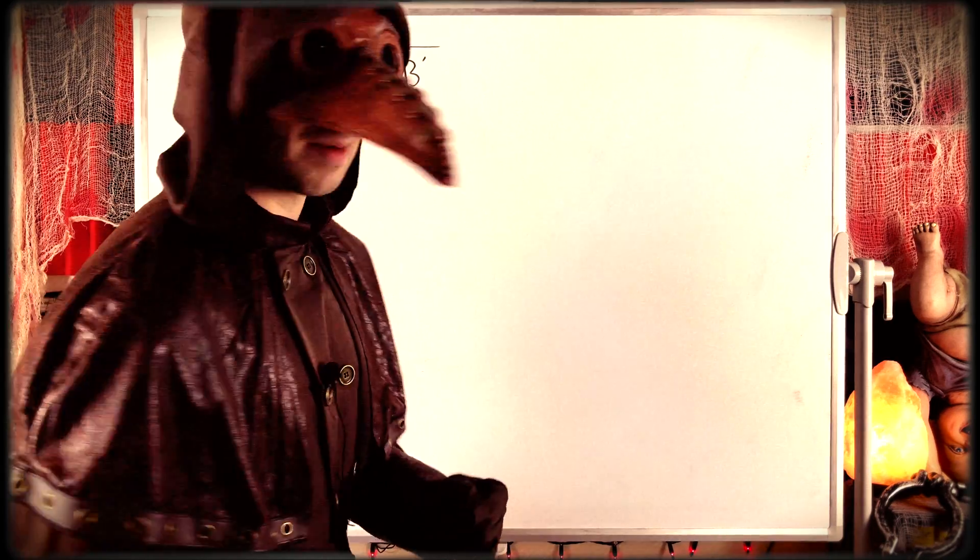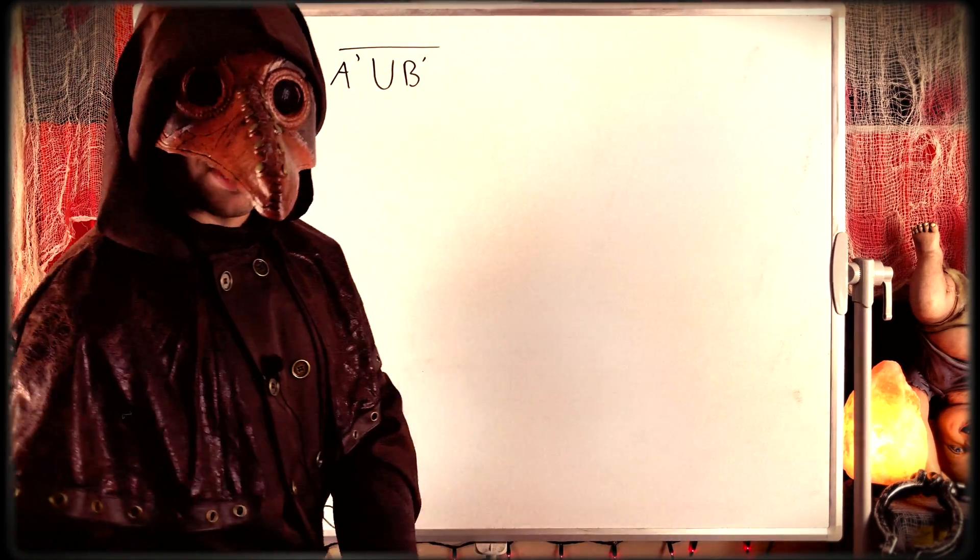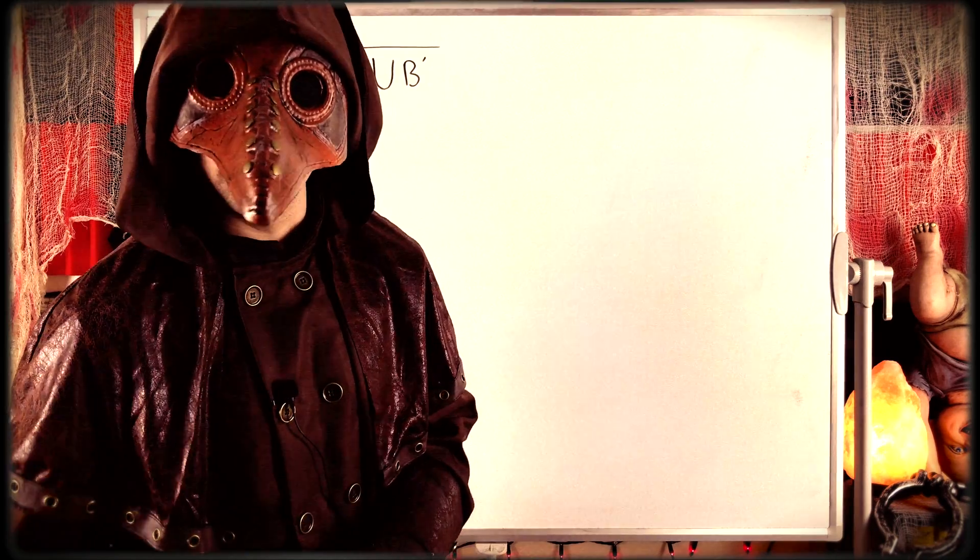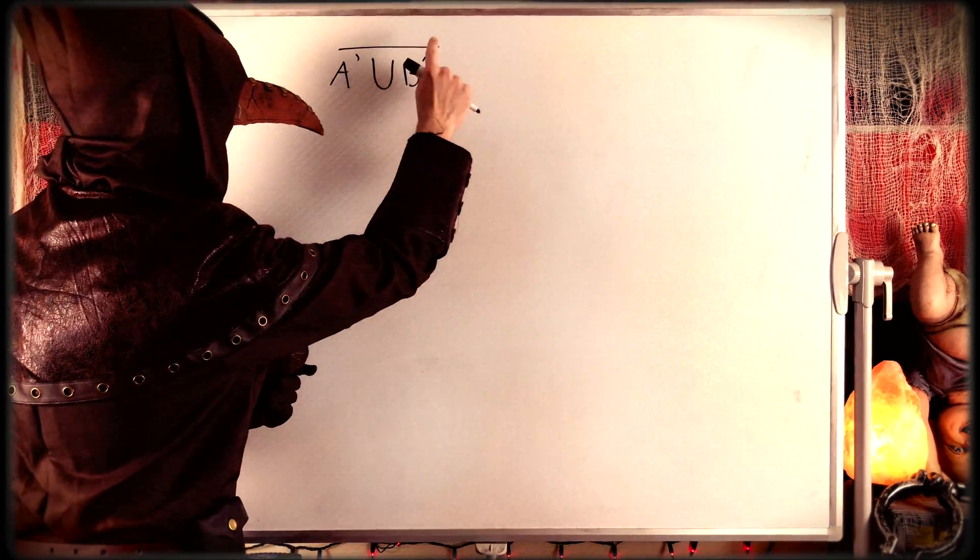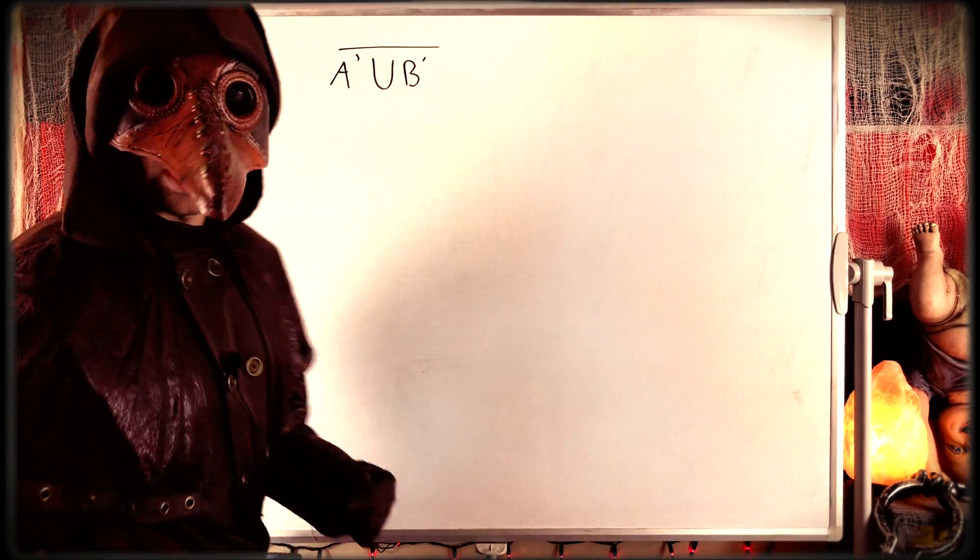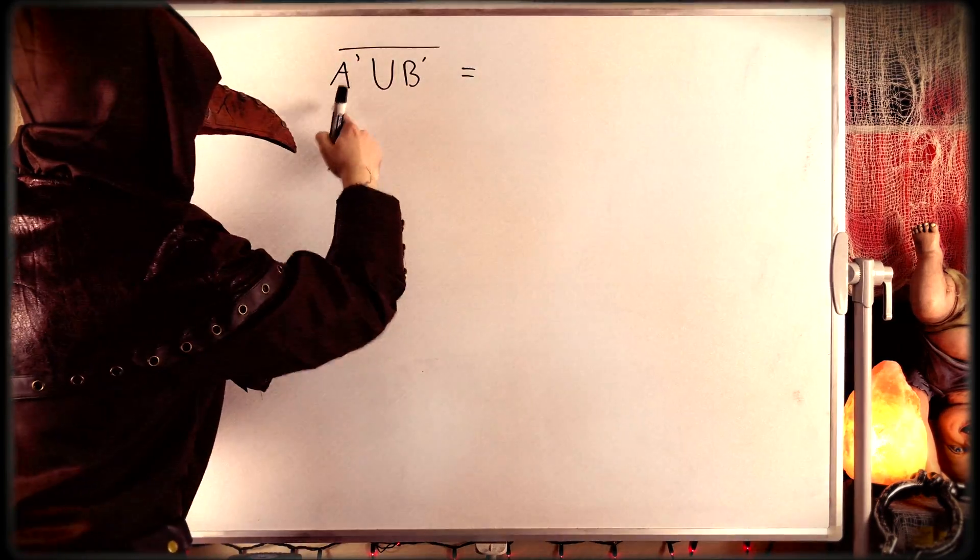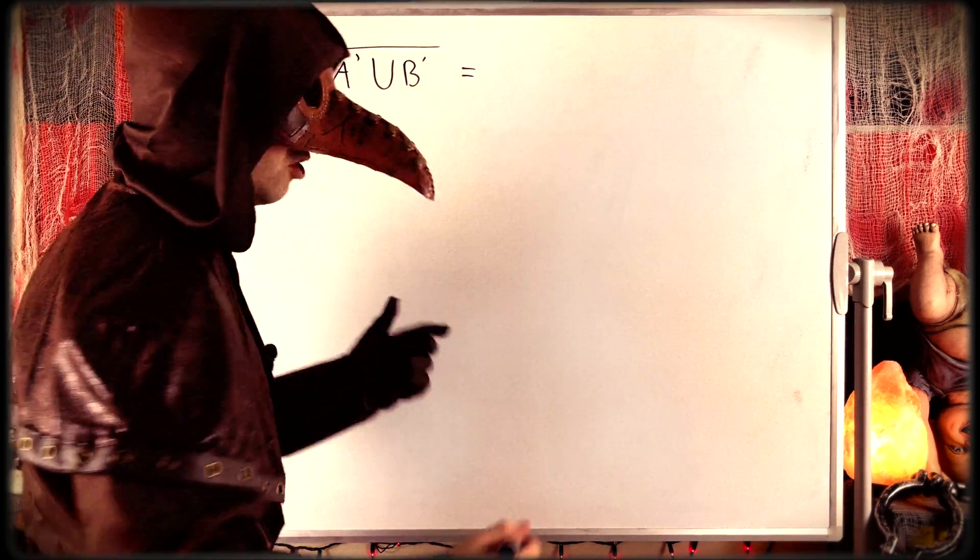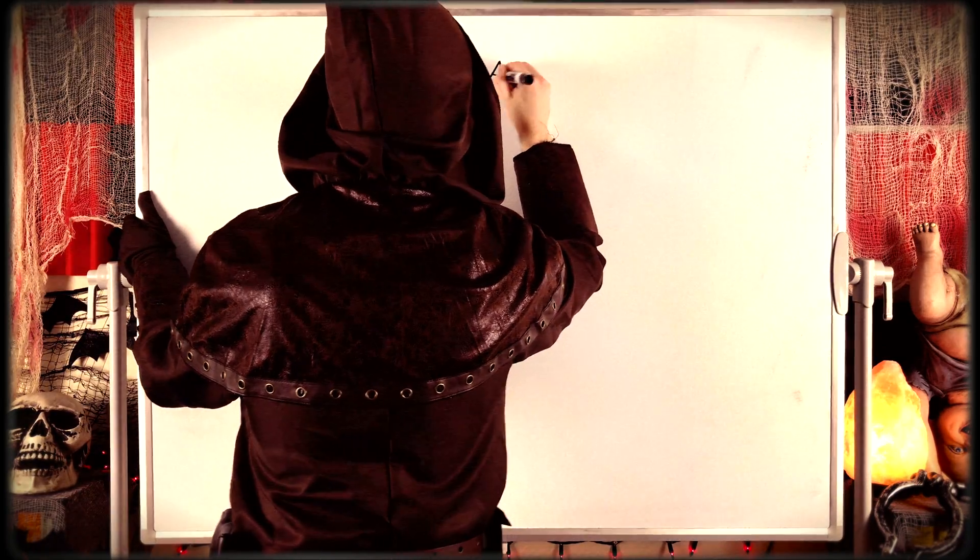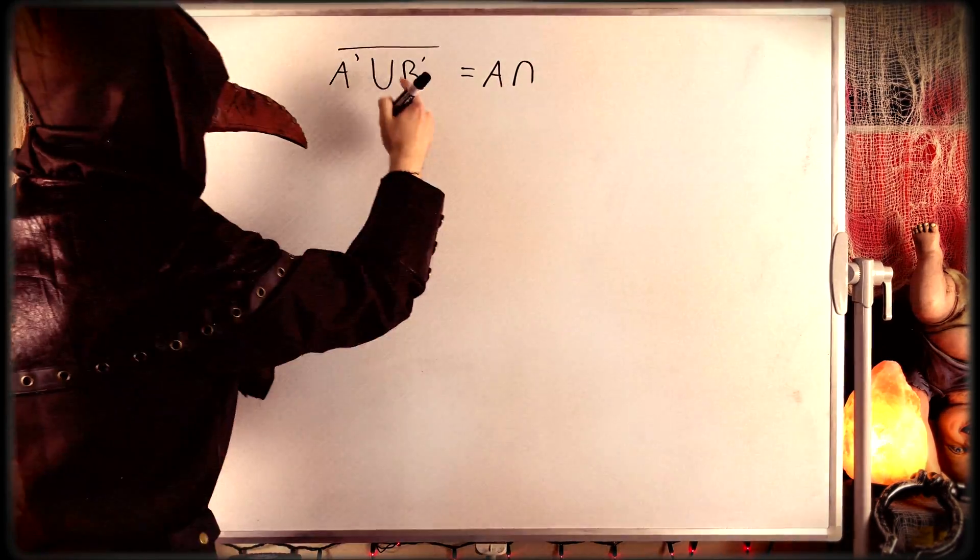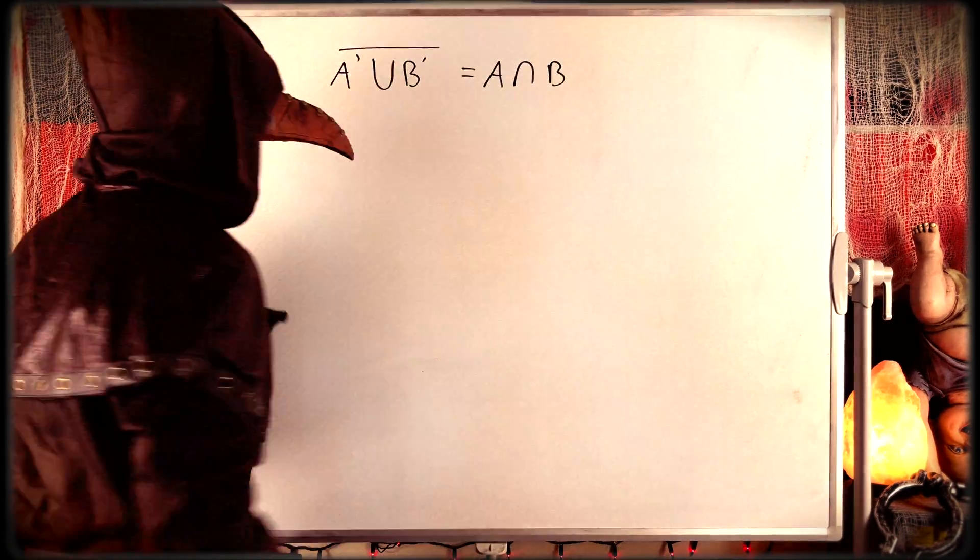And it's pretty intuitive if you don't remember the laws. We can think of the complement of a set kind of like taking the opposite of the set. So what's the opposite of A complement union B complement? Well, that would be equal to the opposite of A complement, which is just the set A, the opposite of union, which is intersection, and then the opposite of B complement, which is just the set B.